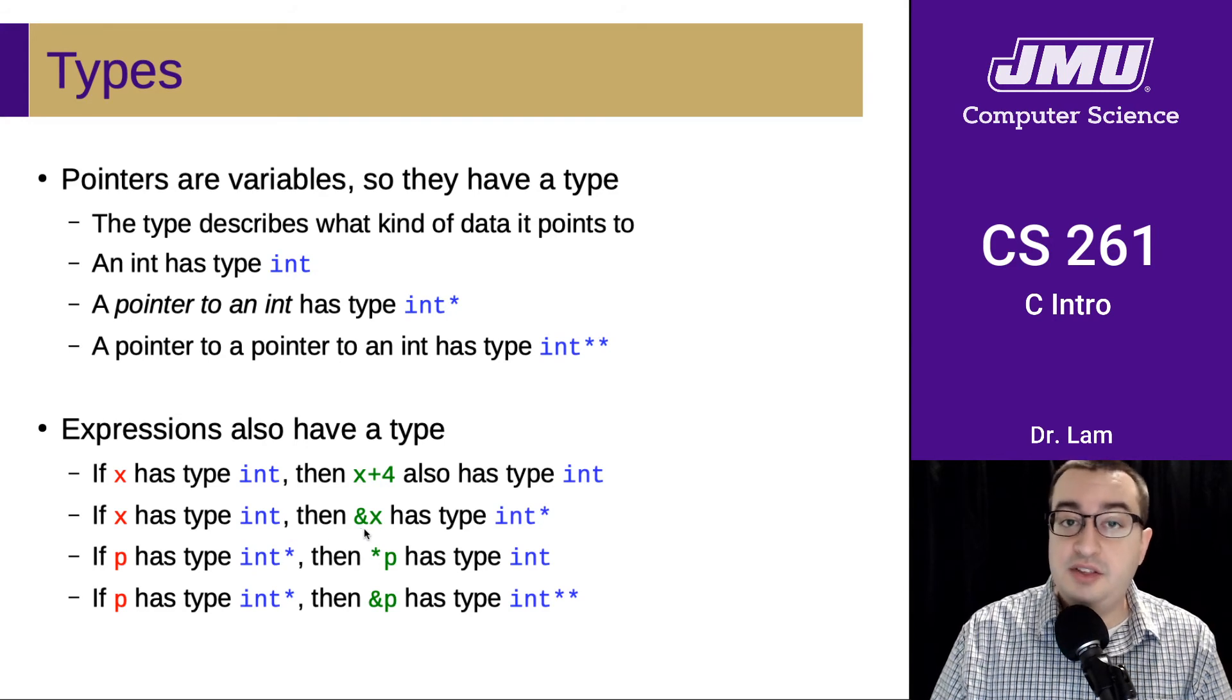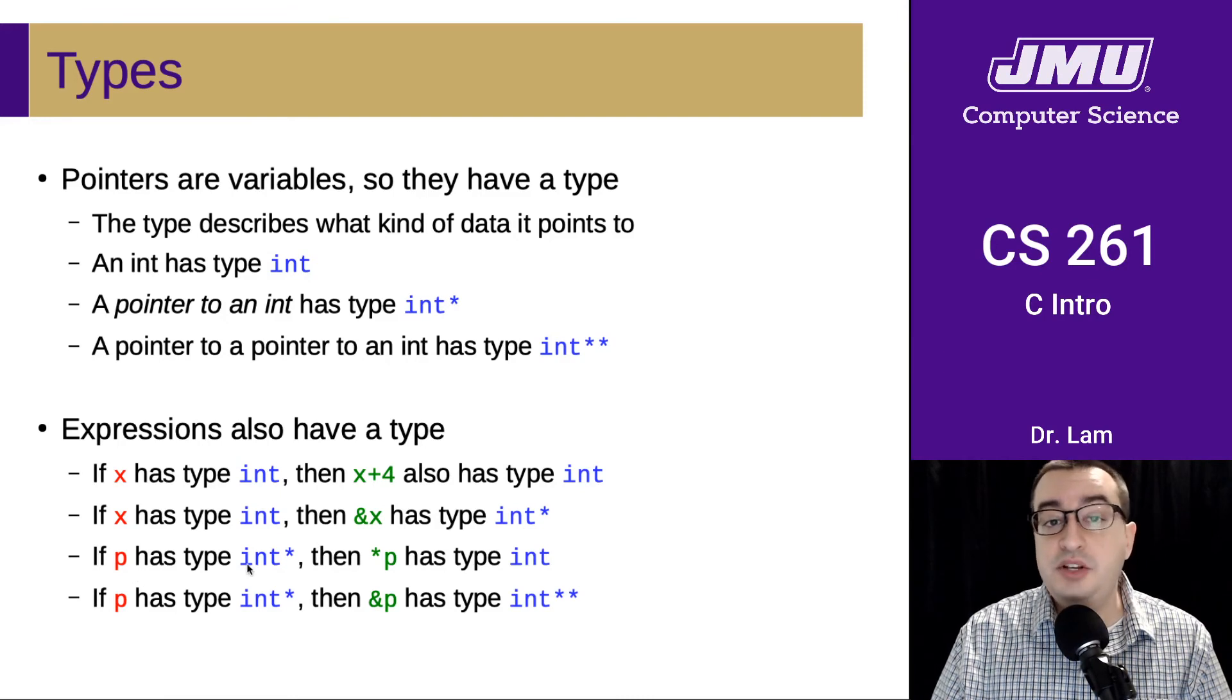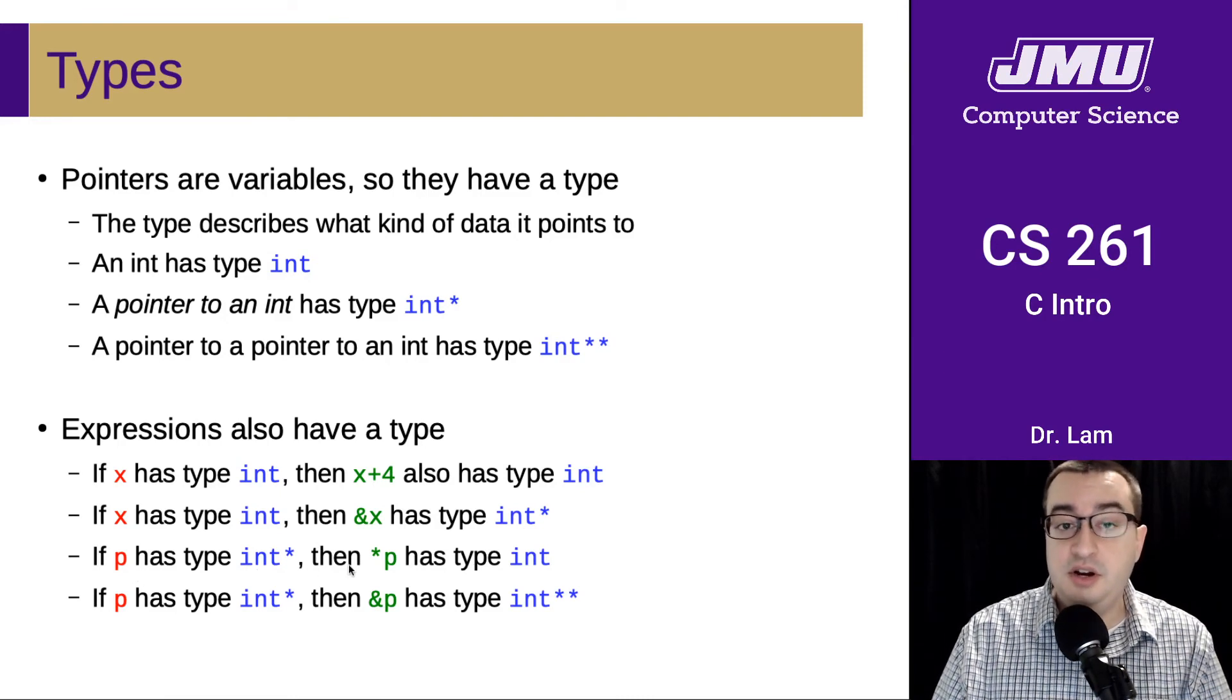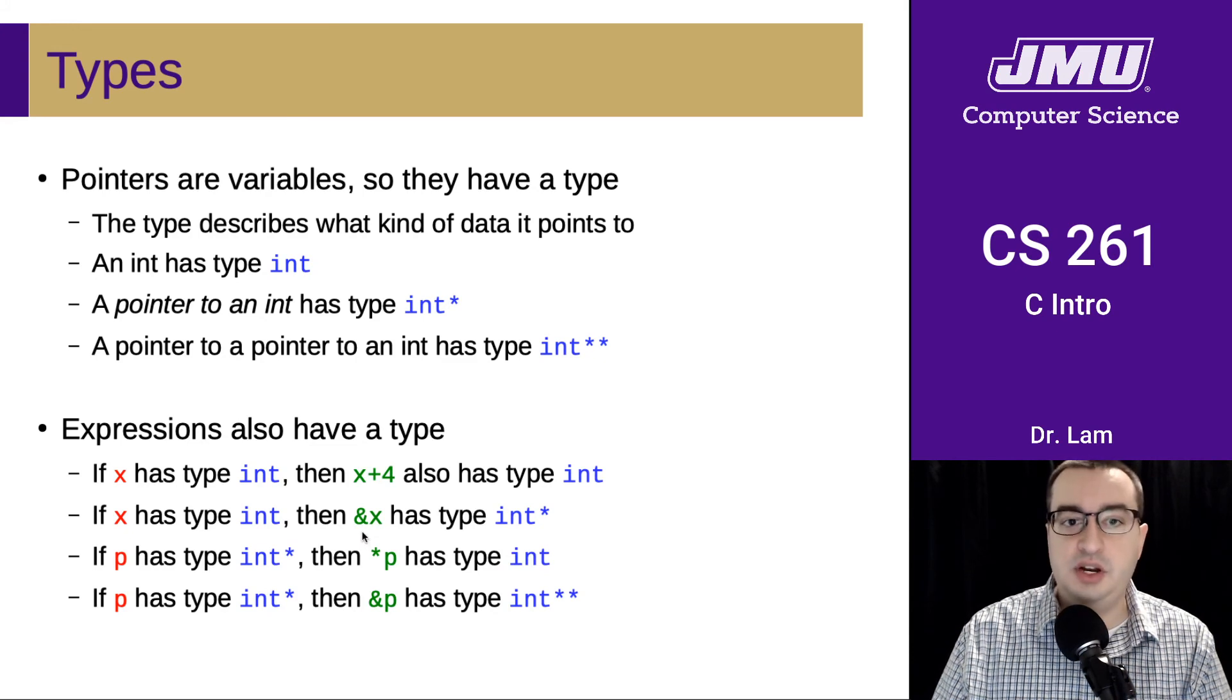If P is a pointer to an int or an int star, then the dereference of P is going to have type int. And so you can sort of see that these two operators are sort of opposites of each other in some sense.